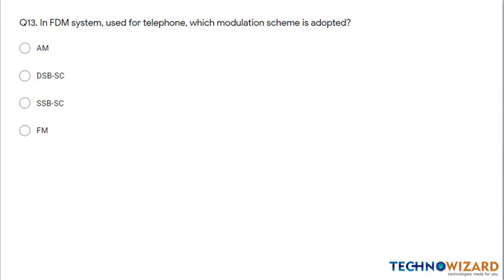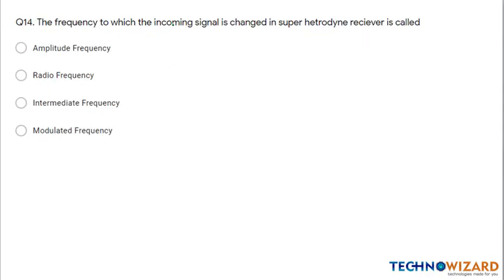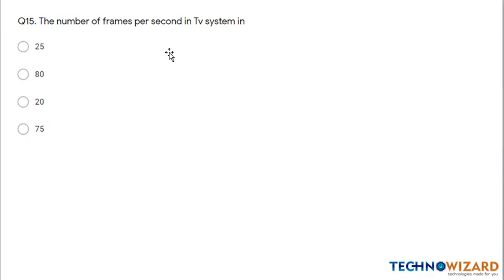Question 13: In an FDM system used for telephone, the modulation scheme adopted is Single Sideband Suppressed Carrier (SSB-SC). Question 14: The frequency to which the incoming signal is changed in a superheterodyne receiver is the intermediate frequency.